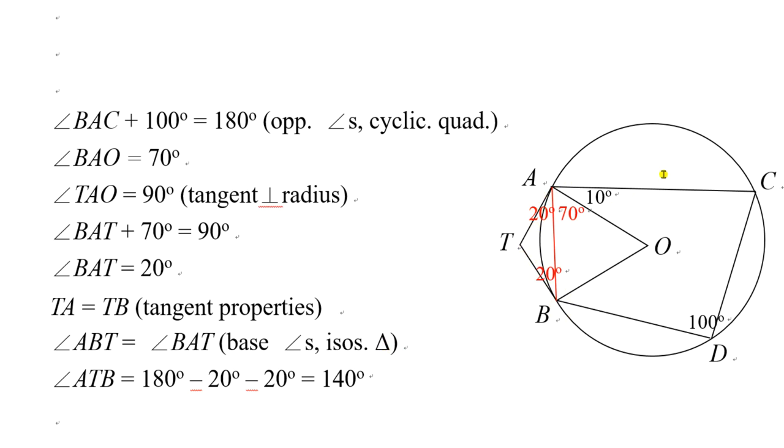So in the final stage, you can find angle ATB, that is 180 degrees minus 20 degrees minus 20 degrees. And you get 140 degrees.